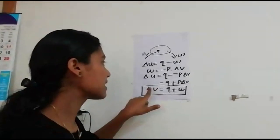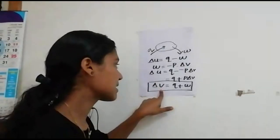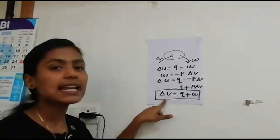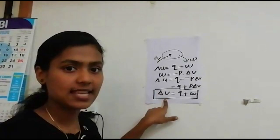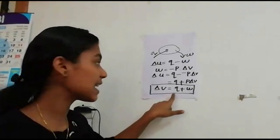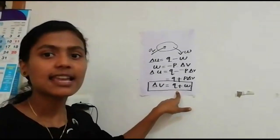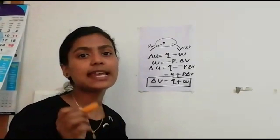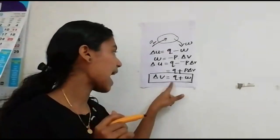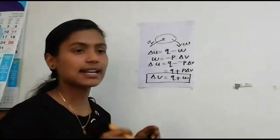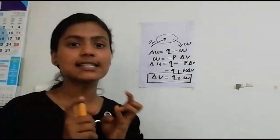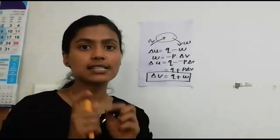From this law, we can understand that the internal energy change of a closed system is equal to the energy transferred across its boundary as heat and work.